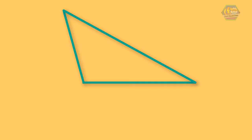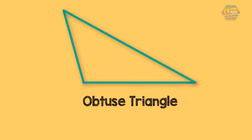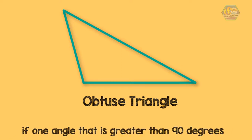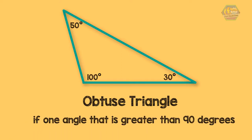And last but not the least is the obtuse triangle. We can call a triangle an obtuse triangle if one of its angles is more than 90 degrees, just like this triangle shown here.